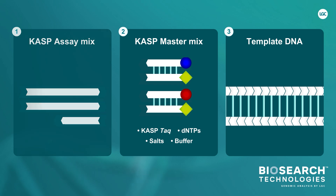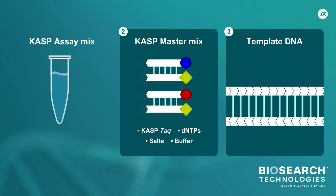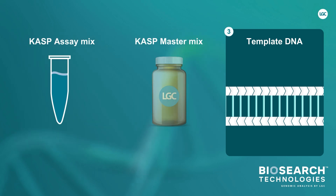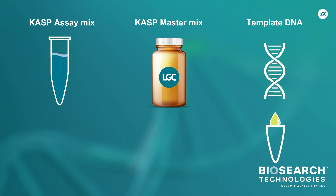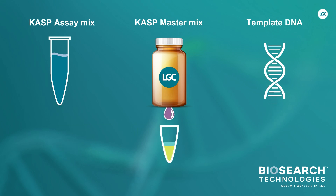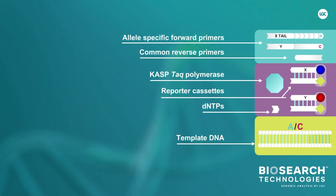To run a CAASP reaction, the CAASP assay mix, the CAASP master mix, and the DNA sample containing the target SNP are combined in a single tube or well. Once all the reaction components have been combined and the tube is securely sealed, the CAASP thermal cycling protocol is then run.